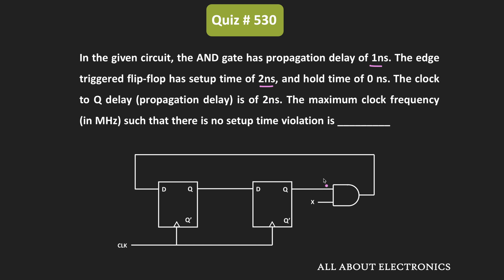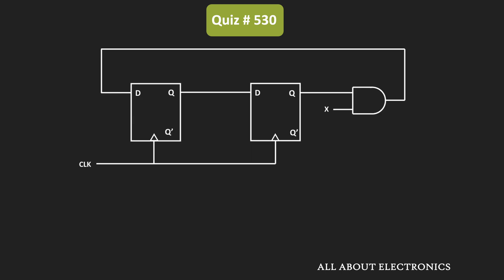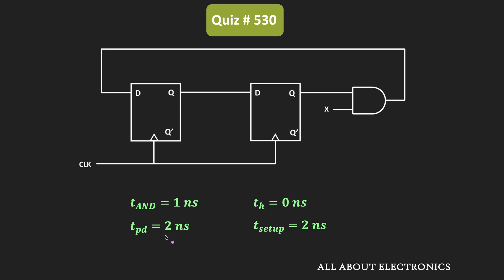For the given sequential circuit, we have been asked to find the maximum clock frequency in megahertz such that there is no setup time violation. The propagation delay of the AND gate is 1 nanosecond, the propagation delay of each flip-flop is 2 nanoseconds, the setup time is 2 nanoseconds, and the hold time is 0 nanoseconds.